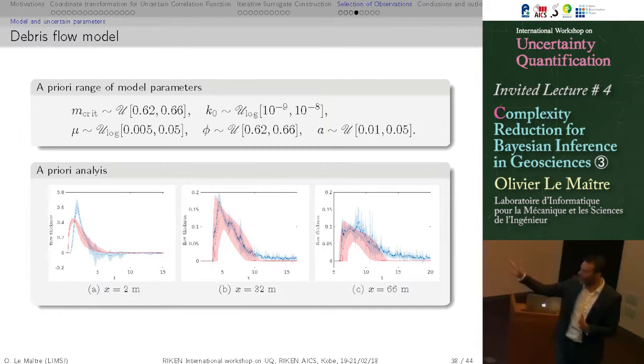Why? Because the model generates things like transverse waves, break up of the mass of debris, lots of things that cannot be reflected actually in the observations. Either because it's clearly not present in the observation. But if you have discontinuity in the regimes and the behavior, say, if you have fragmentation of the mass of debris, this is really going to be an issue to construct a smooth surrogate.